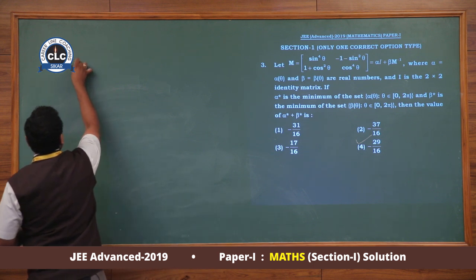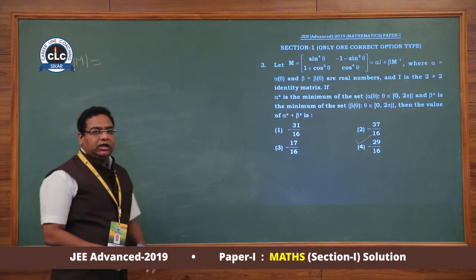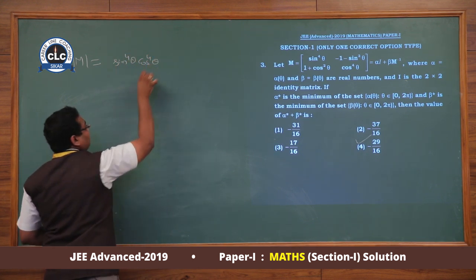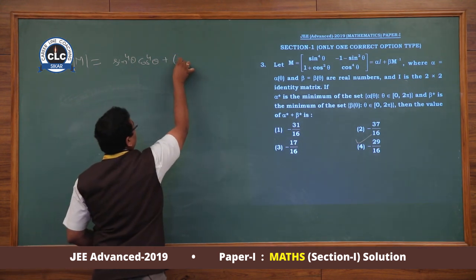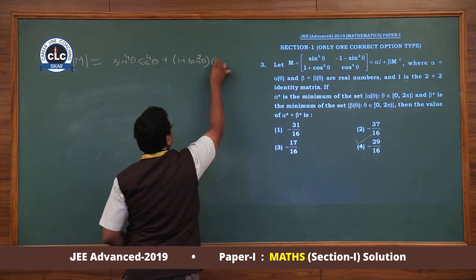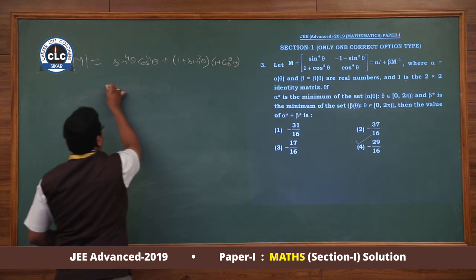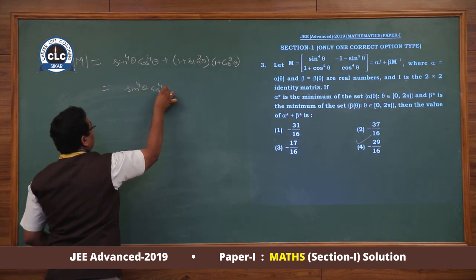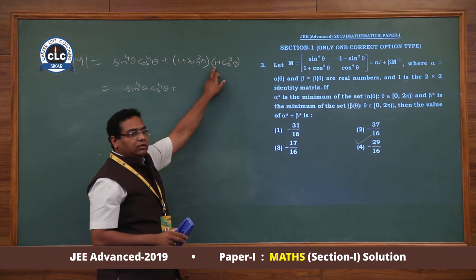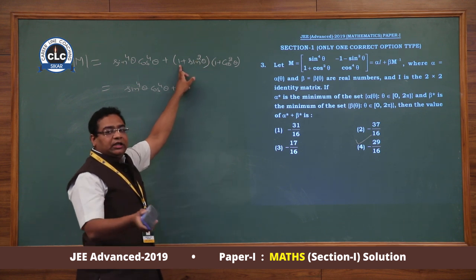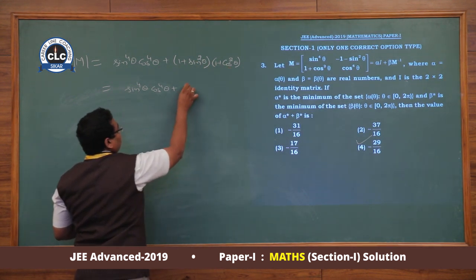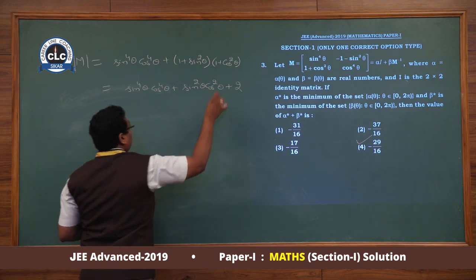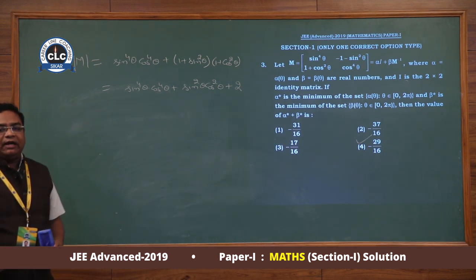First, we calculate the determinant of this matrix. That will be sin⁴θ · cos⁴θ − (−(1 + sin²θ)(1 + cos²θ)). When we simplify this, we get sin⁴θ · cos⁴θ + 1·1 + sin²θ + cos²θ (which is 1, total 2) + sin²θ · cos²θ. So this becomes sin²θ · cos²θ + 2. This is the determinant value of the matrix.